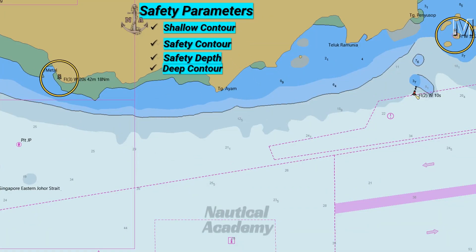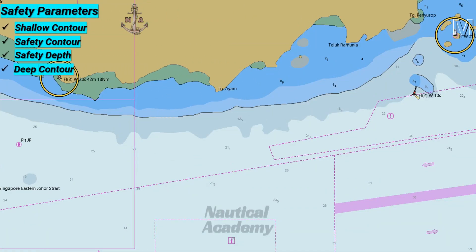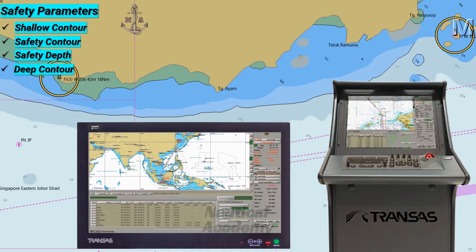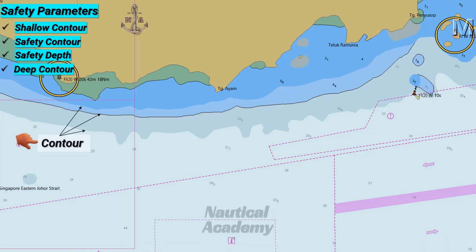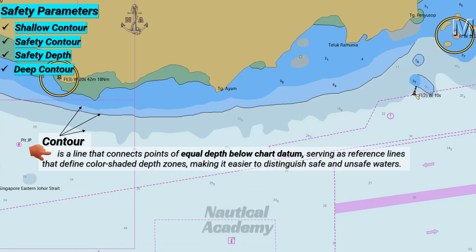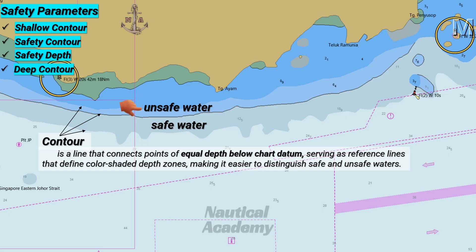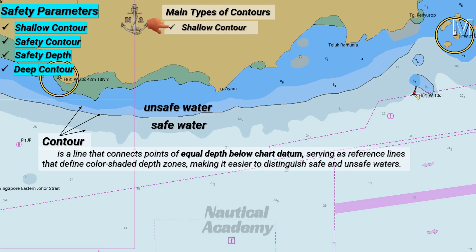Before we proceed, let's have a brief discussion about the safety parameters that must be set in the electronic chart display and information system before creating a route. A contour is a line that connects points of equal depth below chart datum, serving as reference lines that define color-shaded depth zones, making it easier to distinguish safe and unsafe waters. The main types of contours used as safety parameters are the shallow contour, safety contour, and deep contour.